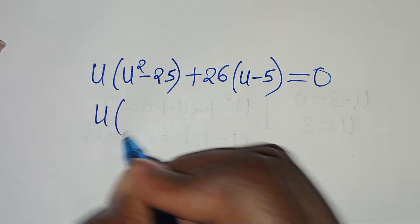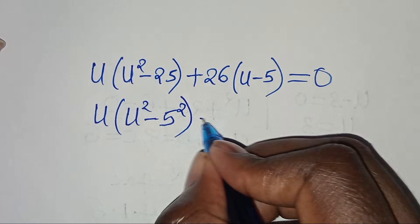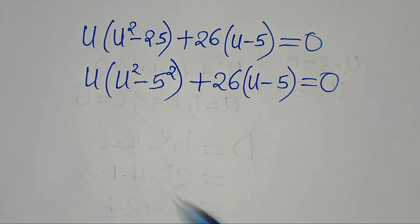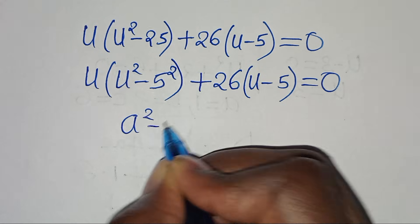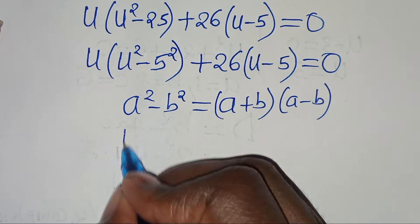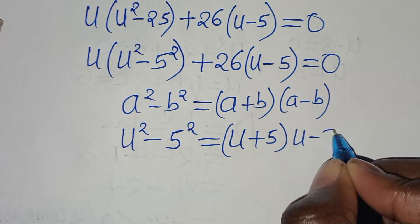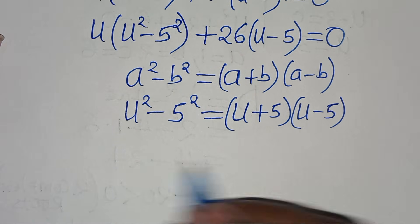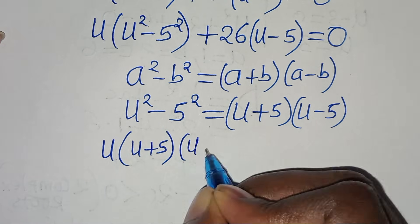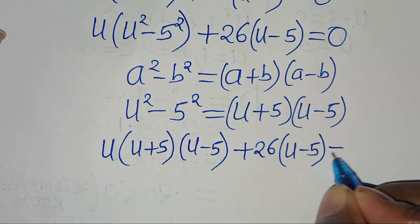Now, u squared minus 5 to the power of 2, then plus 26 into the parenthesis, this is u minus 5, equal to 0. Now, u squared minus 5 squared is in the form of a squared minus b squared, which we can express as a plus b multiplied by a minus b. So therefore, u to the power of 2 minus 25 can be expressed as u plus 5 multiplied by u minus 5. Let's substitute this, so that we have u times the parenthesis u plus 5 multiplied by u minus 5, then plus 26 into the parenthesis u minus 5, equal to 0.